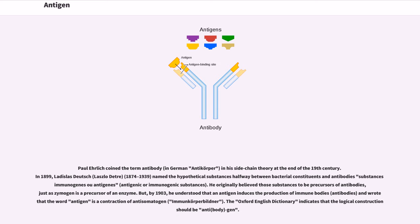Paul Ehrlich coined the term antibody, in German Antikörper, in his side-chain theory at the end of the 19th century. In 1899, Ladislaus Deutsch, László Detre 1874-1939, named the hypothetical substances halfway between bacterial constituents and antibodies substances immunogenes or antigenes, antigenic or immunogenic substances. He originally believed those substances to be precursors of antibodies.